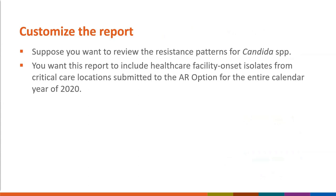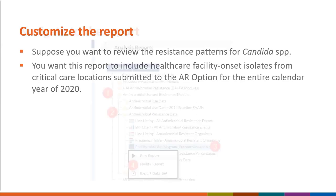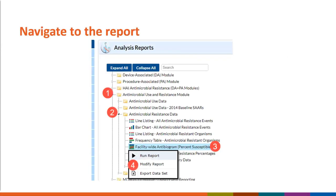Oftentimes, modifying the output will be helpful, so let's look at an example customization. Suppose you want to review the resistance patterns for Candida species, and you want this report to include hospital onset isolates from critical care locations submitted to the AR option for the entire calendar year of 2020. You'll navigate to the report the same way as before — after generating datasets, click Analysis, Reports, Antimicrobial Use and Resistance Module, and then Antimicrobial Resistance Data. After selecting the report, this time we'll choose the Modify report option.